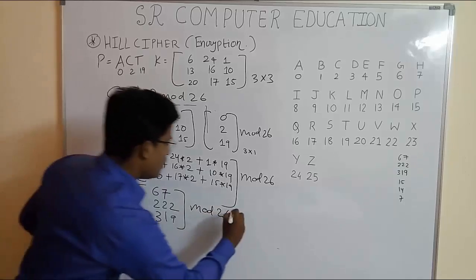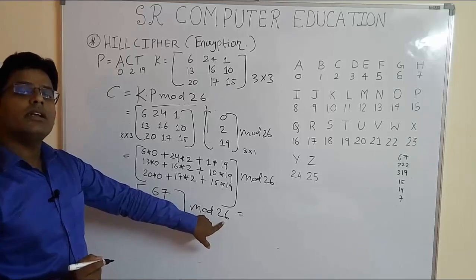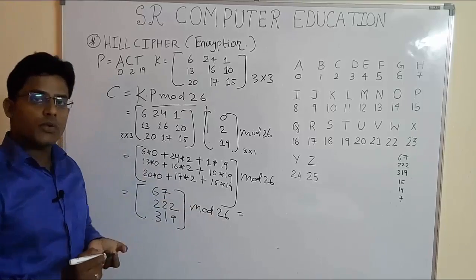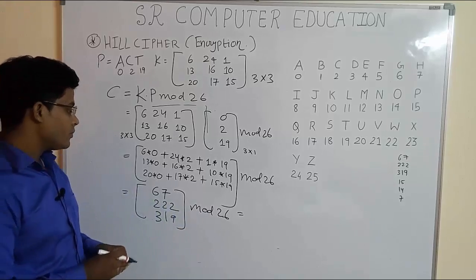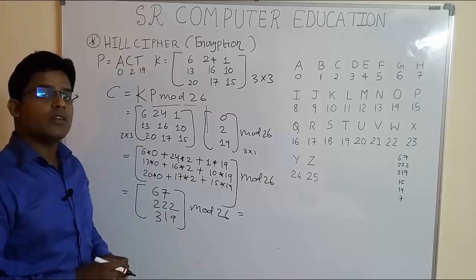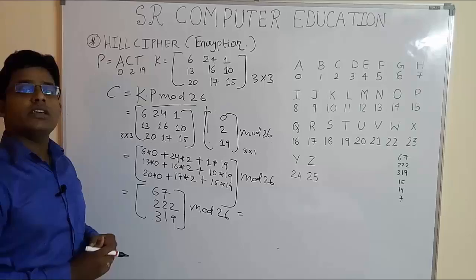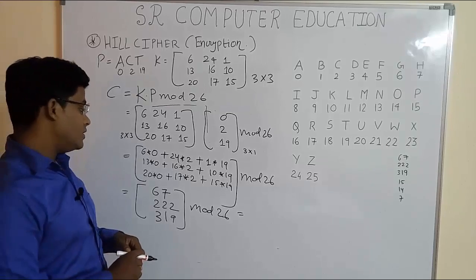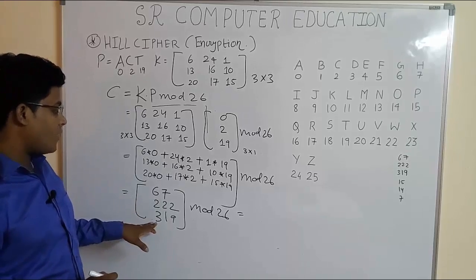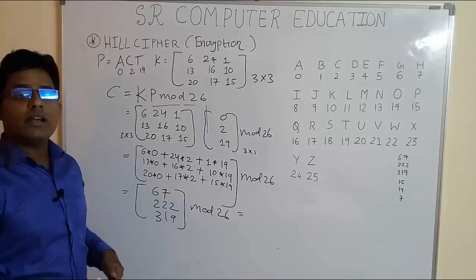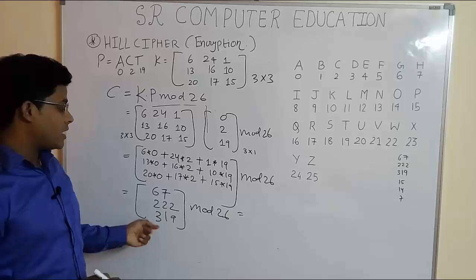Now we already know how to do the mod operation. 67 divided by 26, whatever remainder you get is the answer. Same for 222 divided by 26. I hope you watched my video on how to find the result of the mod operation using a calculator very quickly, because it will save you a lot of time in the examination.